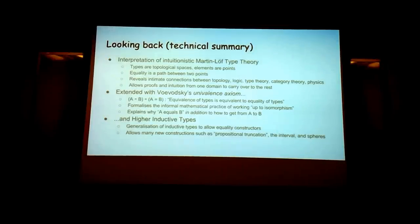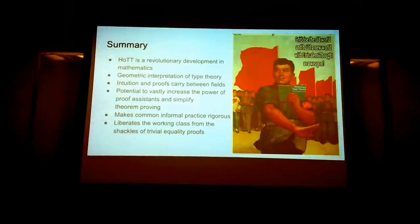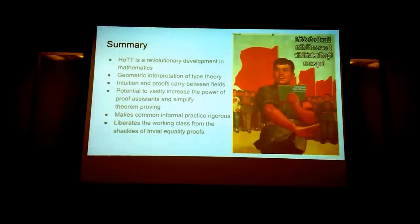In mathematics, people often work up to isomorphism, which is basically a fancy name for working by analogy. Equivalences explain why A equals B in addition to how to get from A to B, whereas reflexivity just says here we are. Higher inductive types allow a generalisation of inductive types to allow equality constructors in addition to standard type constructors, and they allow many new constructions such as propositional truncation and spheres.